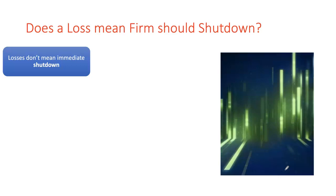A loss does not mean an immediate shutdown. Some firms in real life continue to operate even while making losses. Think of a small mountain town near a ski resort — some mom and pop shops remain operational even when the ski season is long gone, despite not having enough customers. Meanwhile, certain businesses shut down entirely for three or four months and reopen once business picks up. So why do some firms shut down while others continue operating while earning losses?